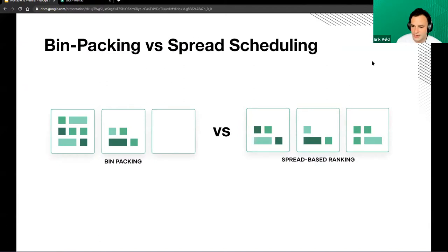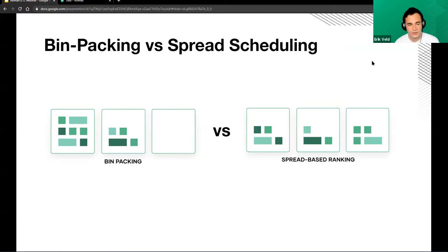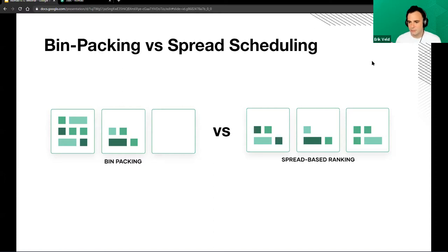Another thing to highlight is that you can now change the default scheduling behavior. By default, Nomad tends to bin pack services — playing Tetris with your services, packing them as efficiently as possible to make the most out of available resources on each node. It'll try to fill up one server first and then start to use others when needed. But for some companies that might not be ideal — if you have a lot of hardware in your data center that you're paying for anyway, you might want to spread load across all those machines.